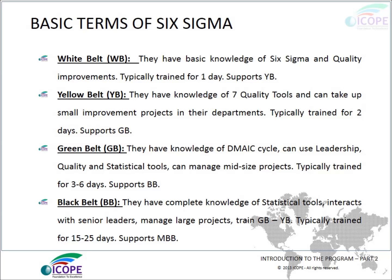Black Belts have complete knowledge of statistical tools, interact with senior leaders, and manage large projects. They train Green Belts and Yellow Belts and are typically trained for 15 to 25 days.